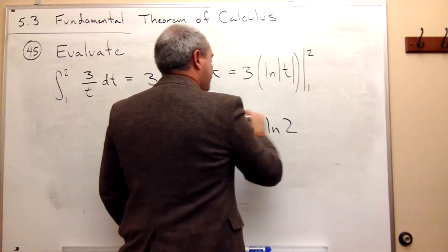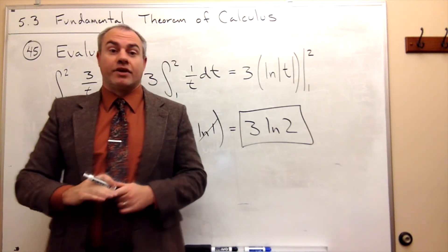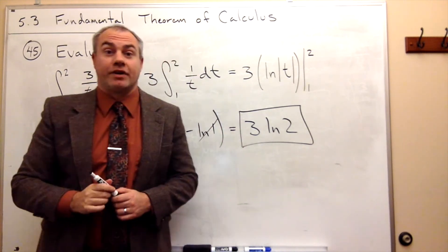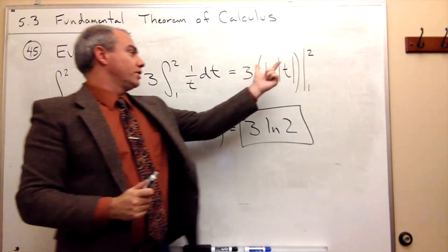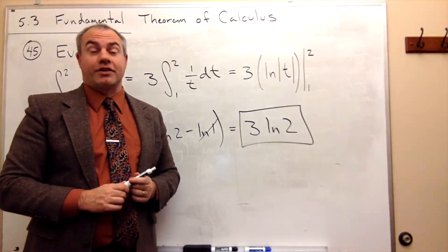So 3 ln of 2 is my antiderivative, or in other words, it's the answer for this definite integral. The antiderivative is actually right here. This is just the solution to that definite integral.